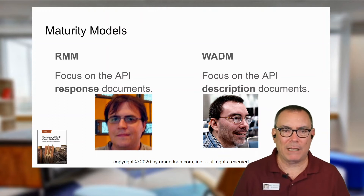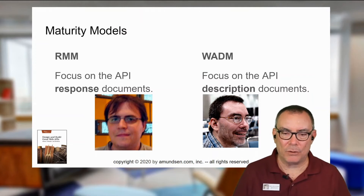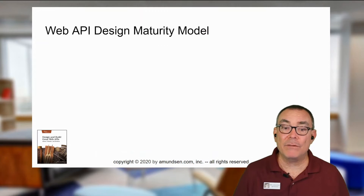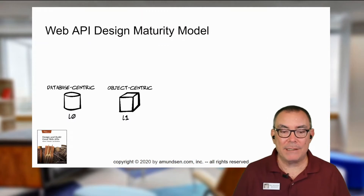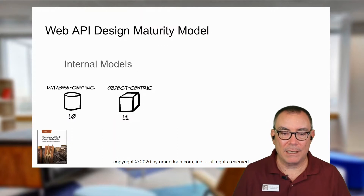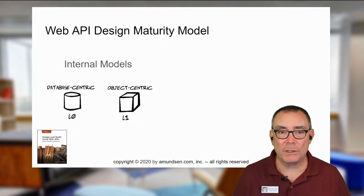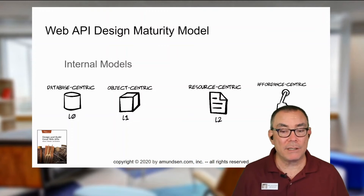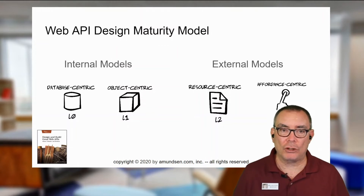Some people have sort of taken this notion that I was also trying to describe runtime — I was really trying to describe design time experiences. So let's talk about this. I really talk about this notion of database-centric and object-centric modeling of your APIs, and those are all internal models. Nobody on the outside knows what your database is, nobody on the outside knows what your internal object model is. But there are also resource-centric and affordance-centric models — that last one might be a little confusing, we'll talk about that in just a minute. These are very much external models; they model the externalities of your API, of your interface.